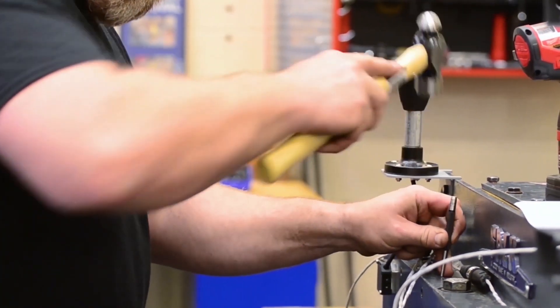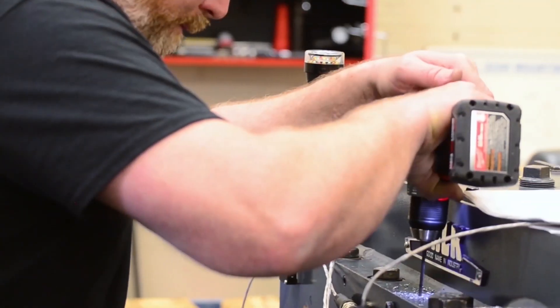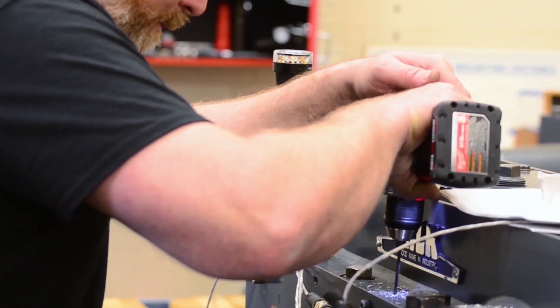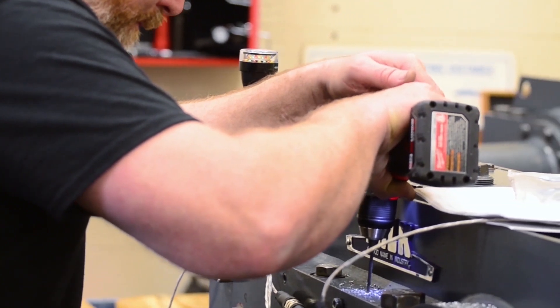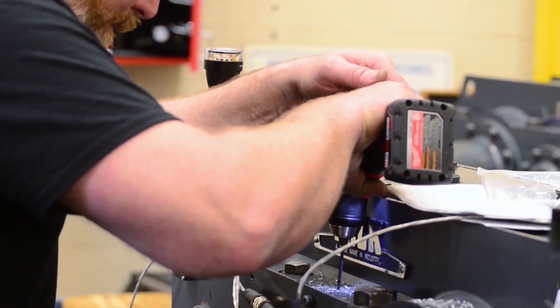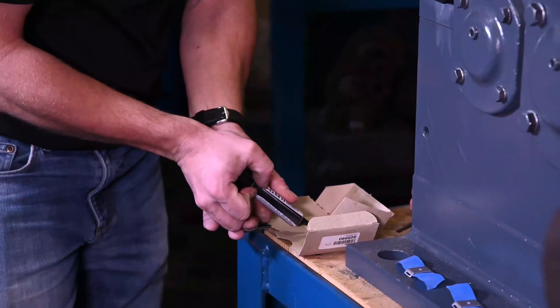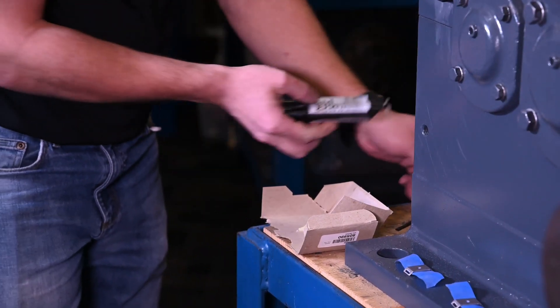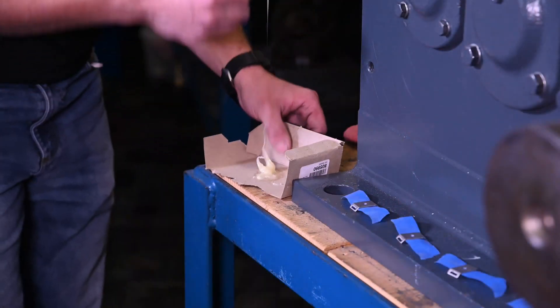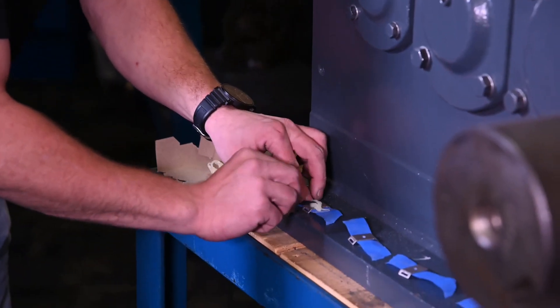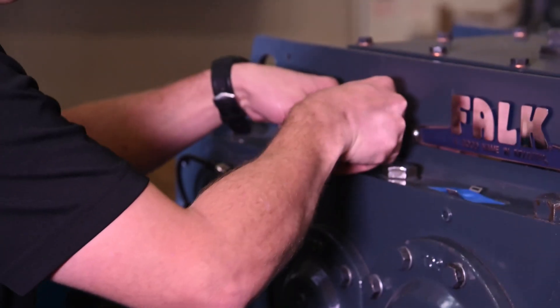For Falk gear drives, the converter clip can be drilled into the gearbox, but do not drill into the machine surfaces or through the gearbox. Alternatively, the converter can also be secured to a cable mount that is epoxied to the gear drive. Ensure that the surface is prepped and cleaned before applying the epoxy.